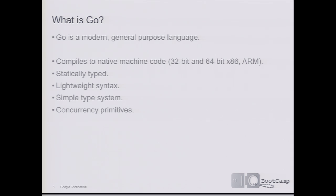So Go is a modern general-purpose language. It compiles to native machine code on a variety of architectures. It's statically typed, so you get the reliability and efficiency benefits of a statically typed language, but it has a lightweight syntax. Using type inference, we can infer a lot of the type information, removing that repetition from defining types. It has a simple type system — not a classical OO model — so it's very easy to understand what your code does. And finally, it has some novel concurrency primitives that make reasoning about and writing concurrent code a lot more straightforward.